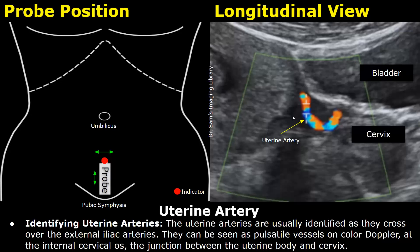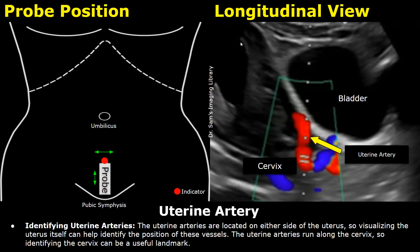When you apply color Doppler, you will find pulsatile vessels at this location — these will be the uterine arteries. You can start by locating the uterus first, then locate the cervix, and then focus on the area between the uterine body and the cervix. By applying color Doppler you will be able to find pulsatile vessels. These will be the uterine arteries; they run along the cervix, so identifying the cervix can be a useful landmark.